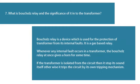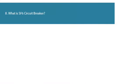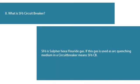Question 8: What is an SF6 circuit breaker? SF6 is sulfur hexafluoride gas. If this gas is used as an arc quenching medium in a circuit breaker, it is called an SF6 circuit breaker (SF6CB).